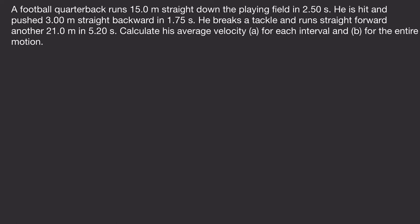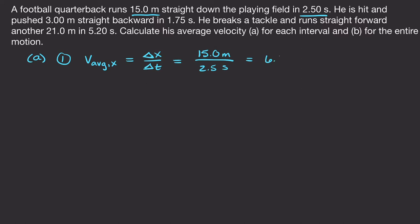The next problem: a football quarterback runs 15 meters straight down the playing field in two and a half seconds. He is hit and pushed three meters straight backward in 1.75 seconds. He breaks a tackle and runs straight forward another 21 meters in 5.2 seconds. Calculate his average velocity for each interval and then for the entire motion. For Part A, first interval: delta x over delta t is 15 meters over 2.5 seconds, giving six meters per second.